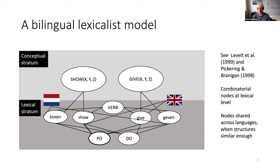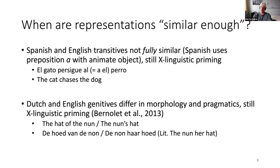The main assumption is that syntax can be shared across languages, and that this shared node is the vehicle for cross-language priming effects. Such nodes are shared when structures in the two languages are similar enough. But when are structures similar enough? Because structures may look alike across languages but have considerable differences. Note that shared nodes are not identical — Spanish and English transitives, for instance, are not fully similar: 'the cat chases the dog' in Spanish has an extra preposition.